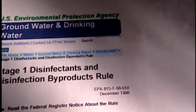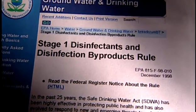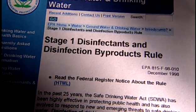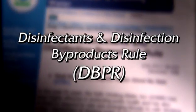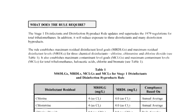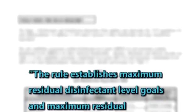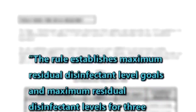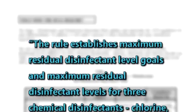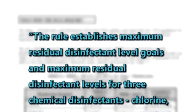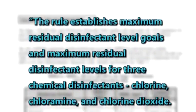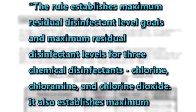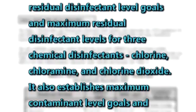The result was the Stage One Rule for Disinfectants and Disinfection Byproducts, abbreviated DBPR, finalized in 1998. According to the EPA, the rule establishes maximum residual disinfectant level goals and maximum residual disinfectant levels for three chemical disinfectants: chlorine, chloramine, and chlorine dioxide.